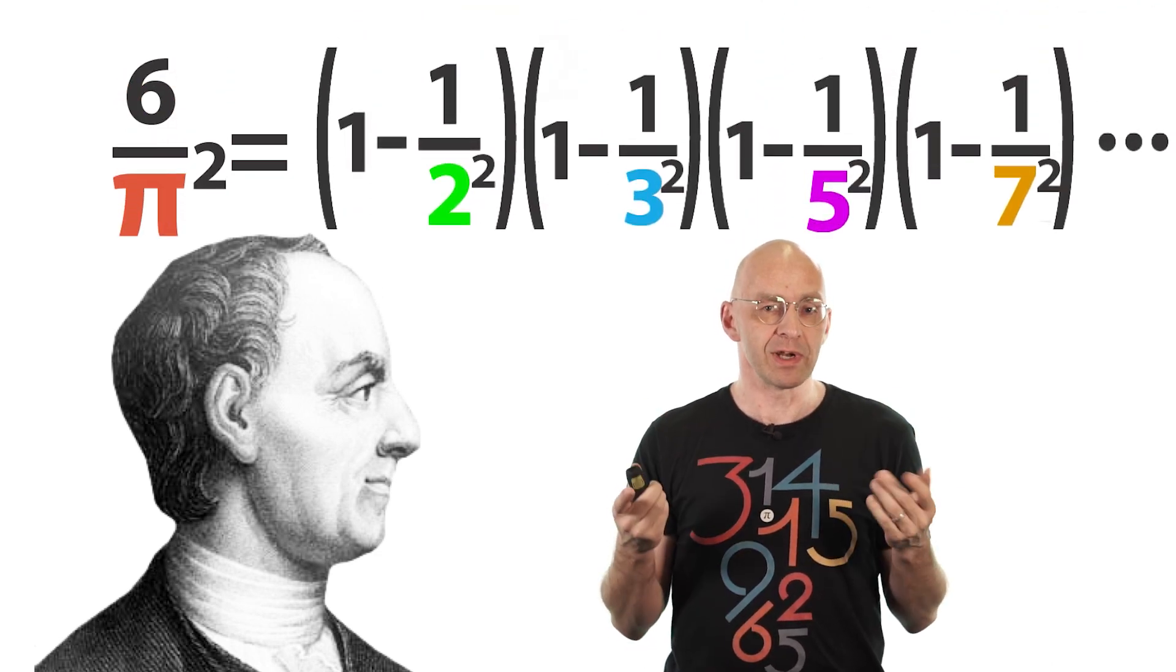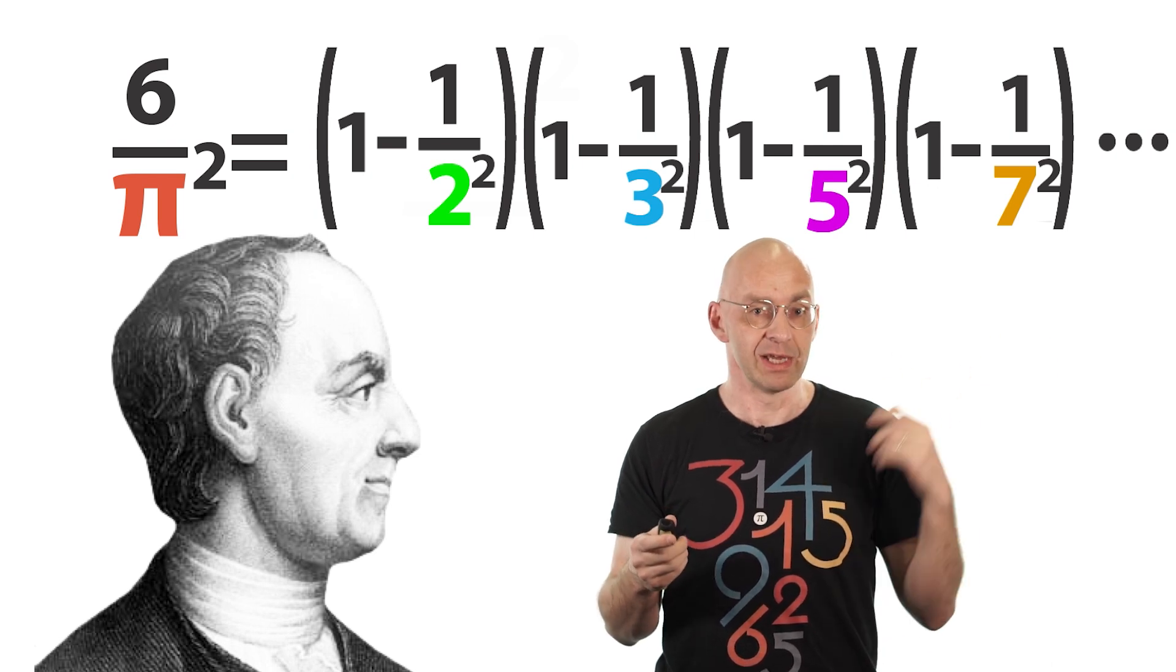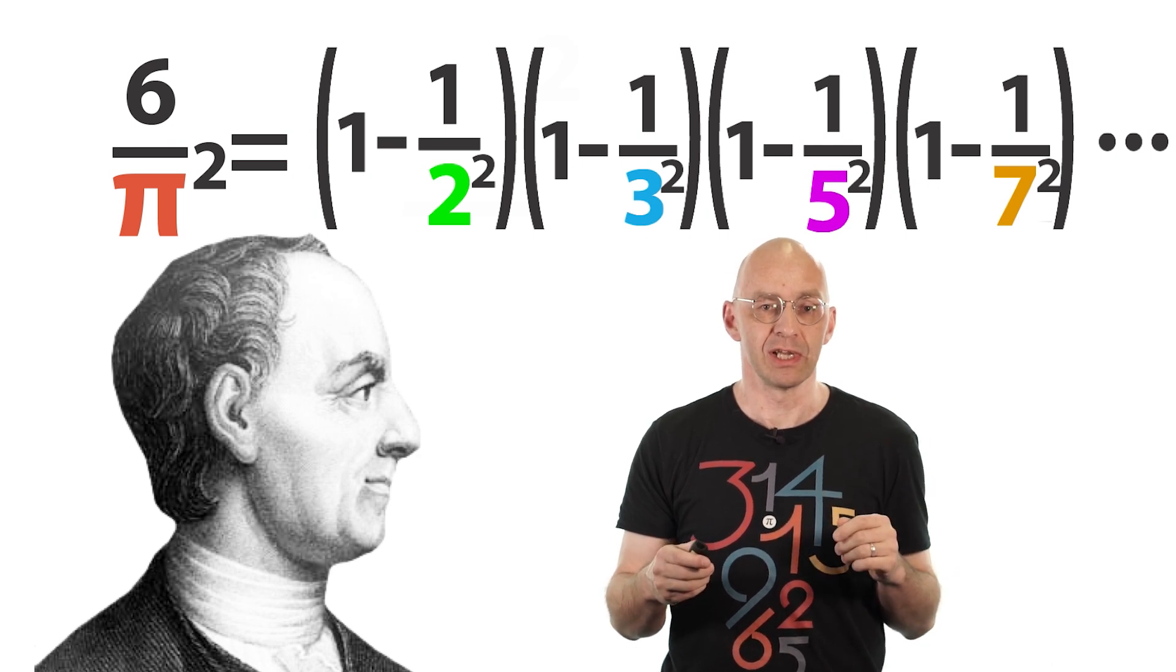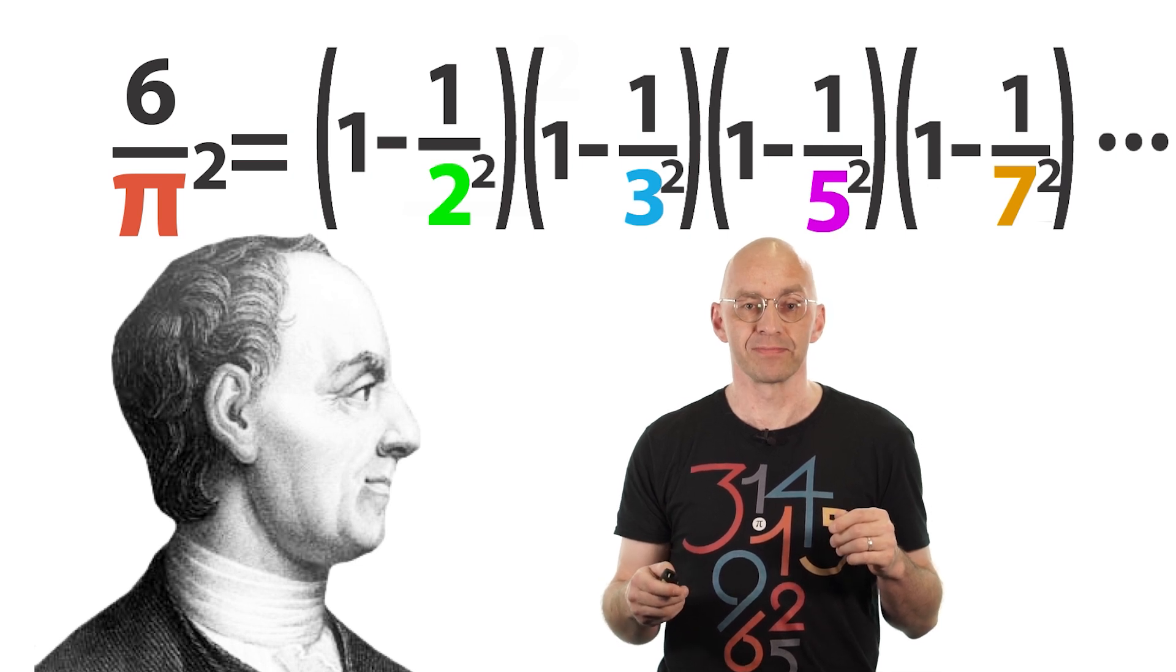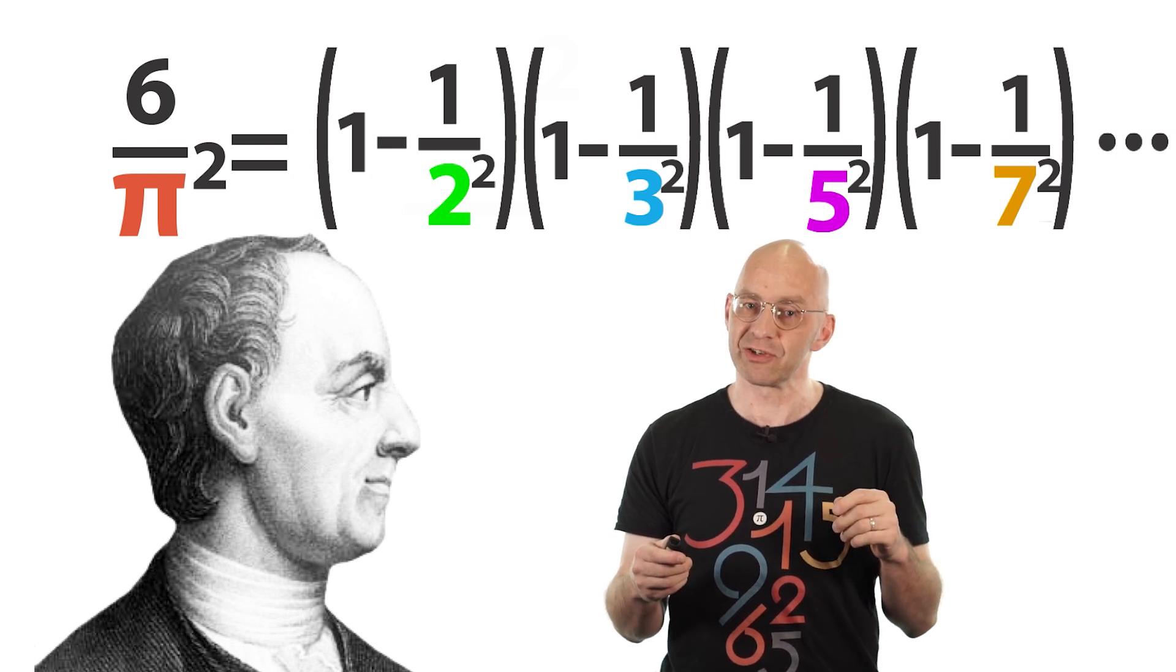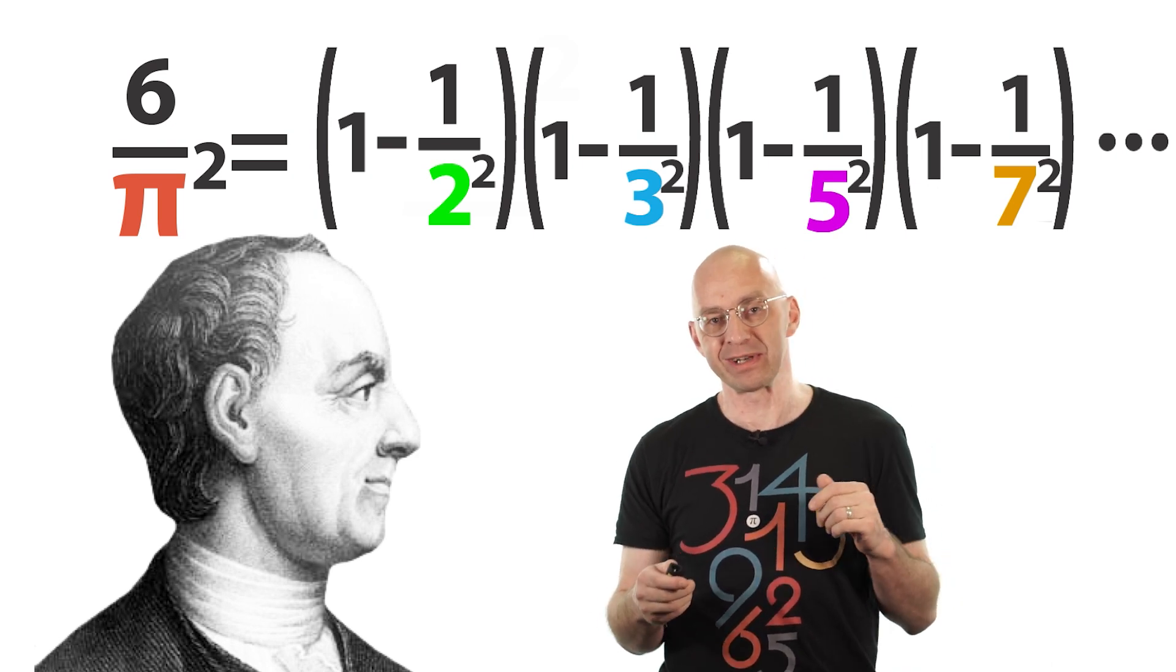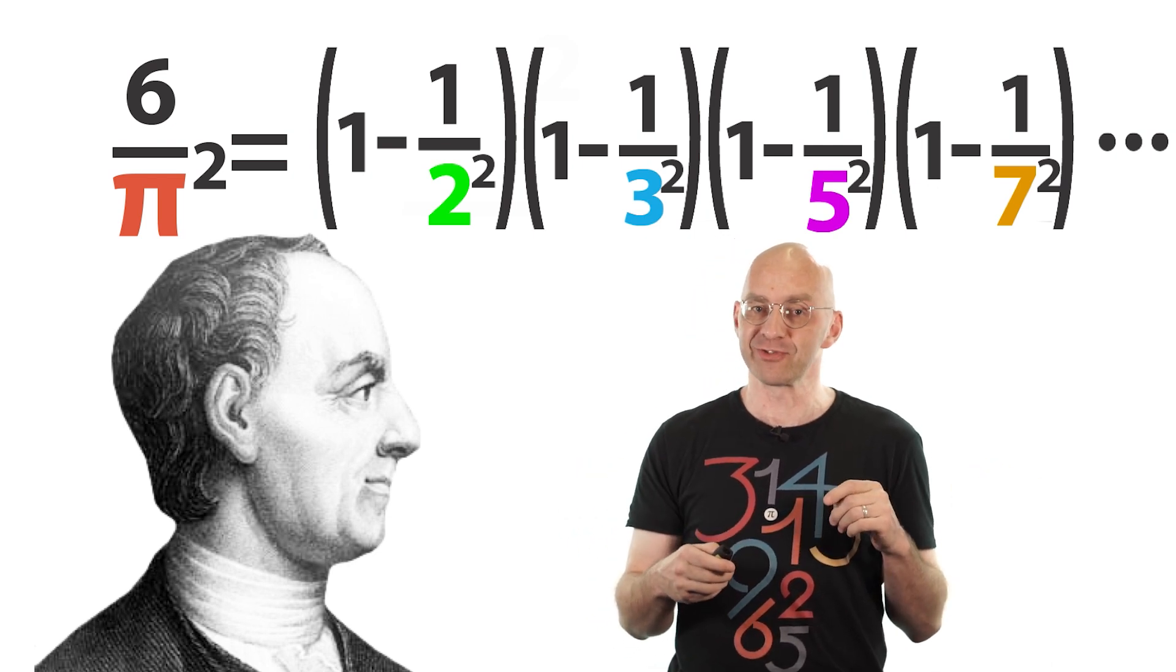And this infinite product establishes a connection between pi and all the prime numbers there on the right. In fact we'll see that this identity is just a special case of the main bridge that connects the famous Riemann zeta function to the prime numbers. Along the way we'll come across many other beautiful identities involving pi, a seriously crazy way to calculate pi using random numbers, and a couple of nifty ways to prove some mathematical all-time classics. So buckle your mathematical seatbelts, it's going to be a wild ride.